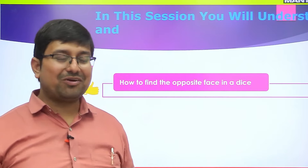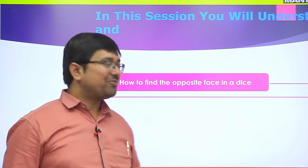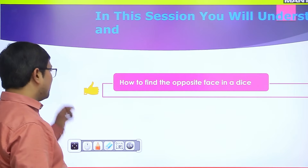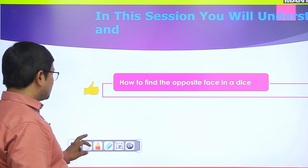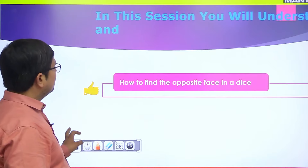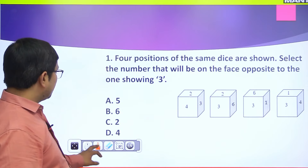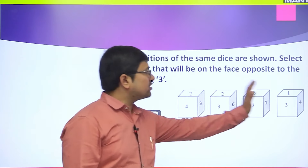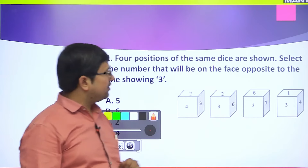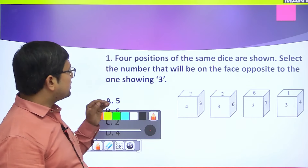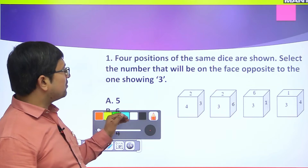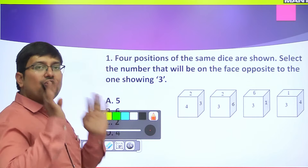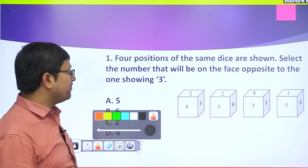Here is the very first question. Four positions of the same dice are given. Select the number that will be on the face opposite to the face showing 3. So we need to find what is opposite to 3.